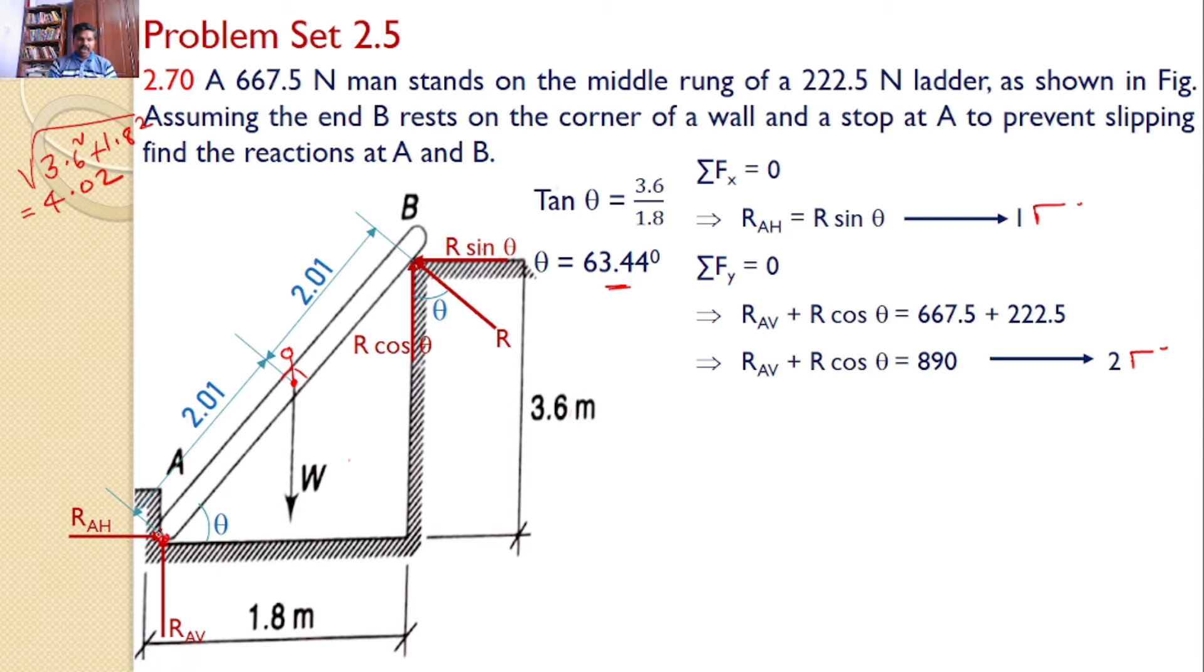Now we will take moments about A. These two forces are passing through this point, so they will not introduce any moment. The weight W will introduce a moment in the clockwise direction. R sin theta will introduce a moment in the counterclockwise direction, and R cos theta will also introduce a moment in the counterclockwise direction.